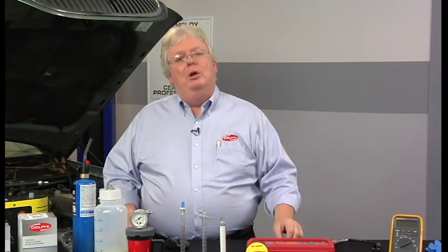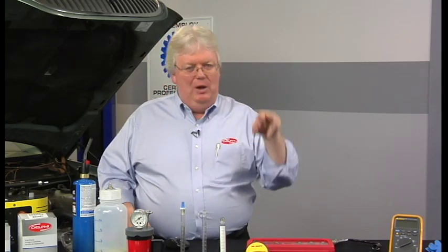We'll also see the trim move back and forth. That wiggly trim you see in the bottom picture is normal. You see about an 8% additional offset for long-term trim as well, meaning it's watched the short-term for a while and compensated — moving up.